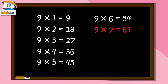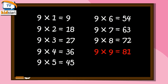9 sixes are 54, 9 sevens are 63, 9 eights are 72, 9 nines are 81, 9 tens are 90.